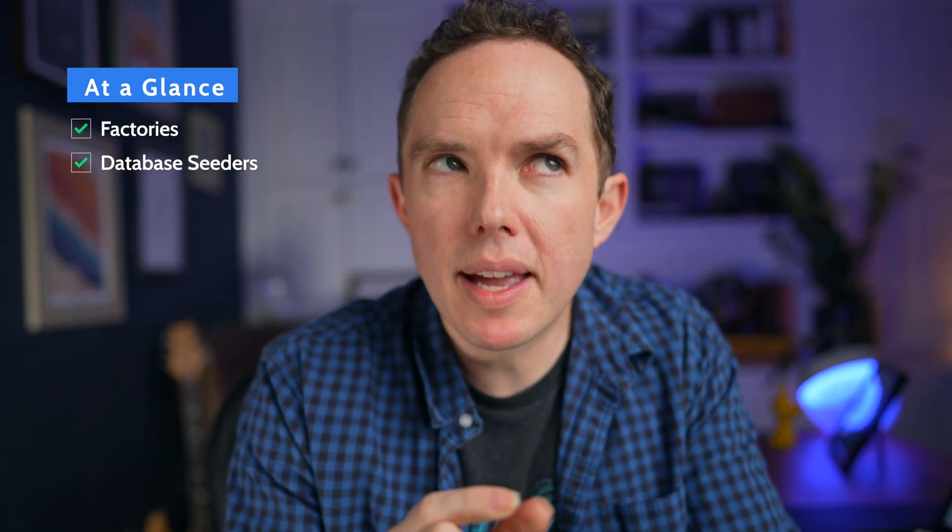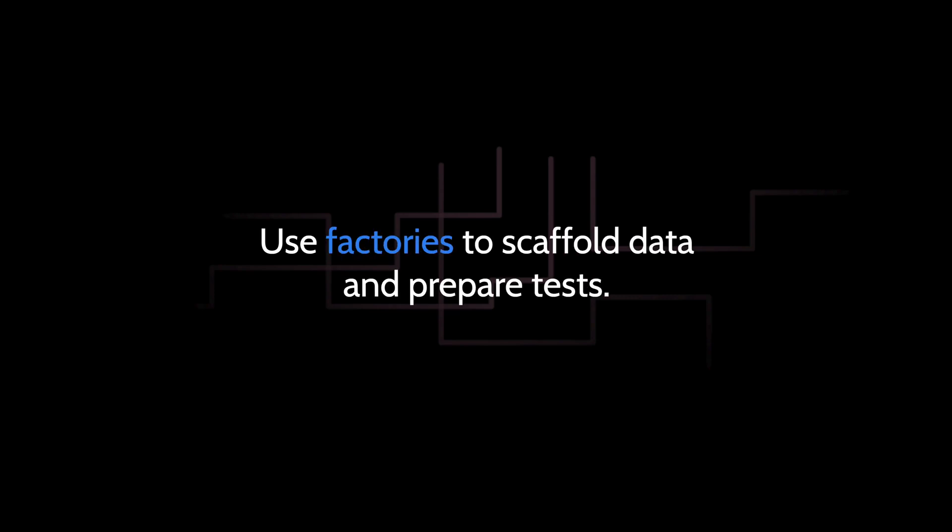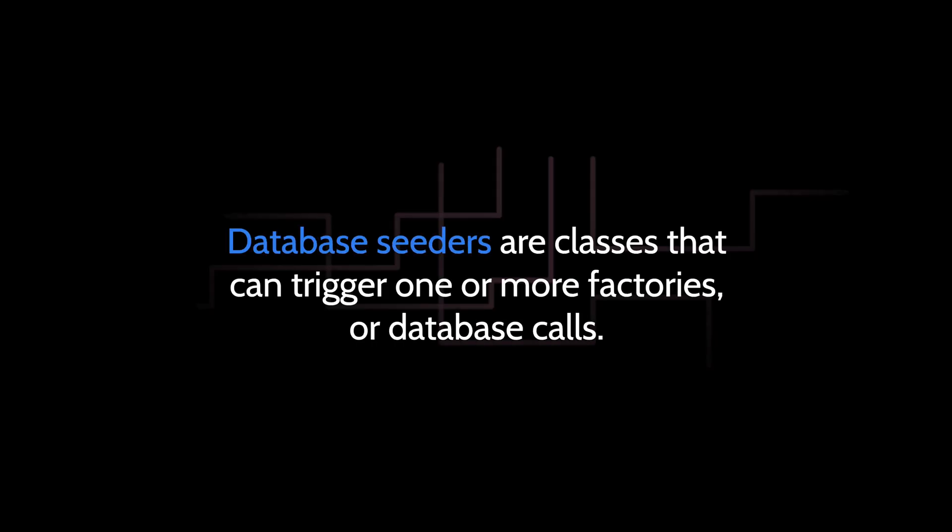You've now learned about the distinction between database factories and seeders. Factories are helpful for quickly scaffolding data and are immensely useful for preparing your tests. Database seeders give us a class where we can trigger those factories — though a seeder doesn't have to use a factory; it could use the database facade or Eloquent directly. Usually though, seeders reach for factories because they're so easy to prepare. We're going to use both in tandem, which makes them punch far above their weight. Good job. In the next chapter, starting on day 16, we are going to move on to forms.